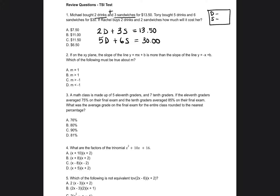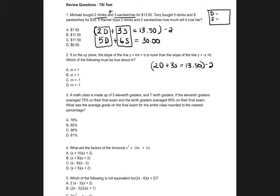I've practiced these types of problems in my other practice tests, so I know what I have to do — I'm going to solve this system of equations through elimination. I'm going to see: can I eliminate the Ds, or can I eliminate the Ss? If I multiply the entire first equation by negative 2, the 3S will become negative 6S and I'll be able to eliminate them. So I'll do 2D plus 3S equals $13.50, multiplied by negative 2, giving me negative 4D minus 6S equals negative $27.